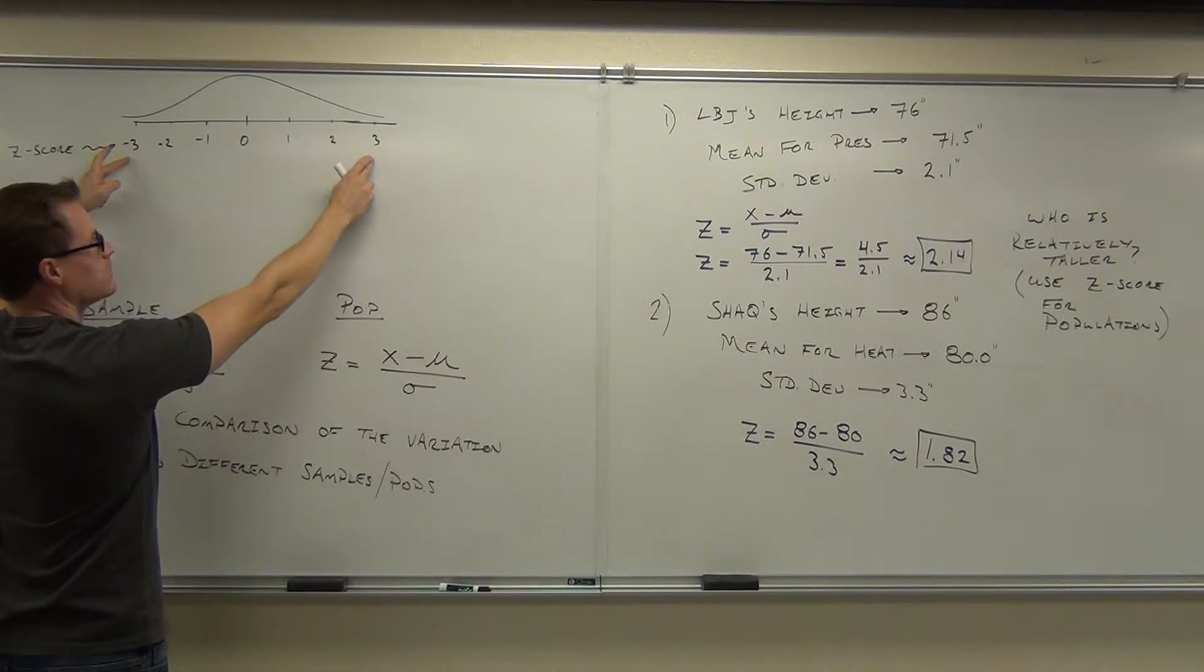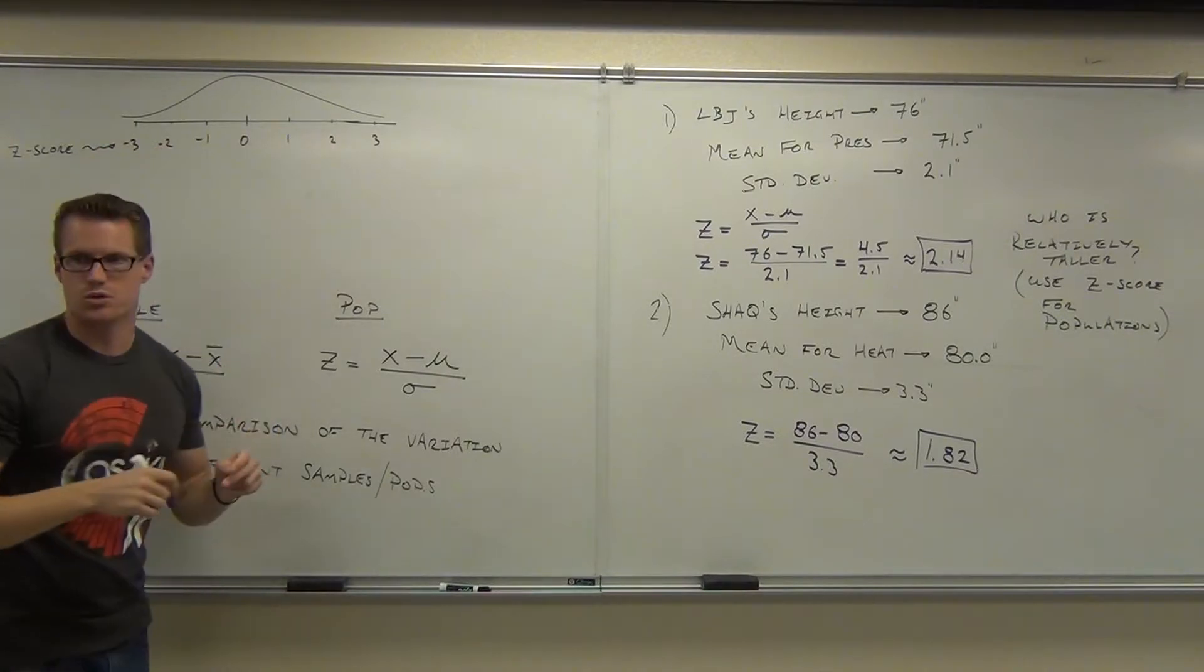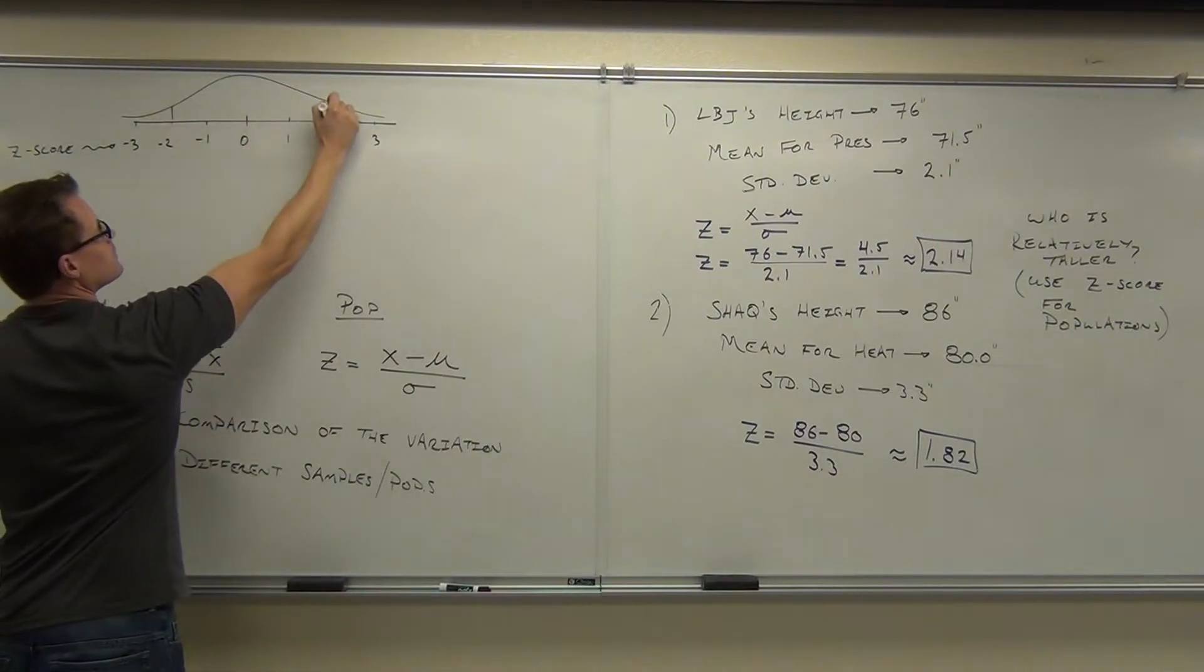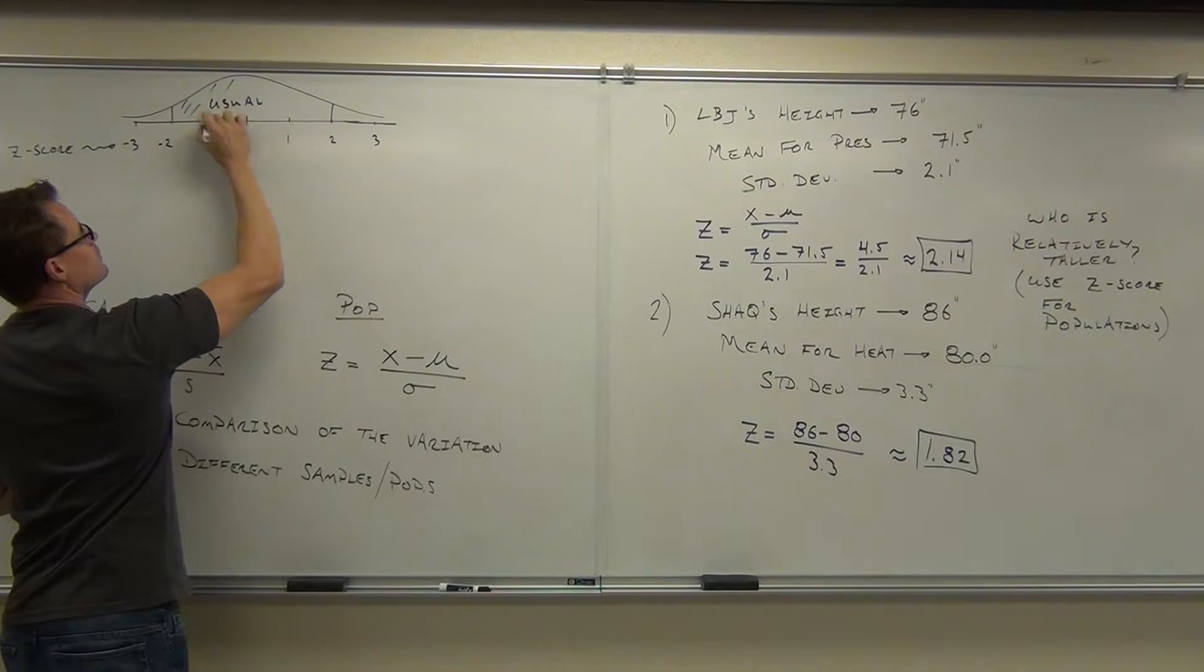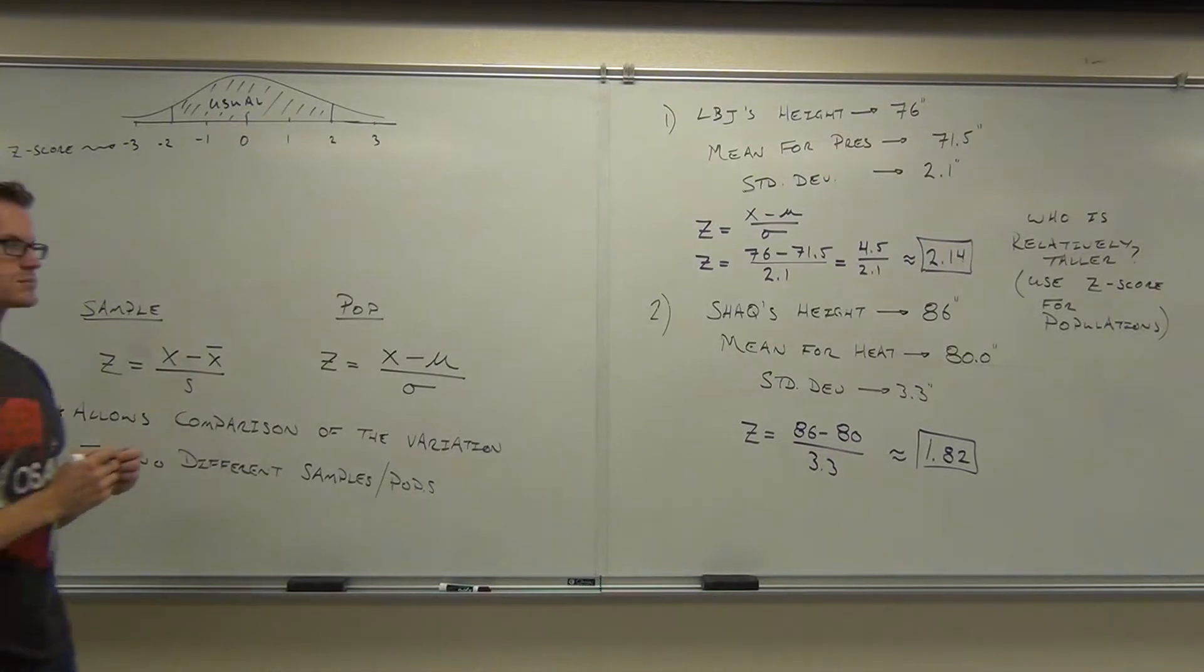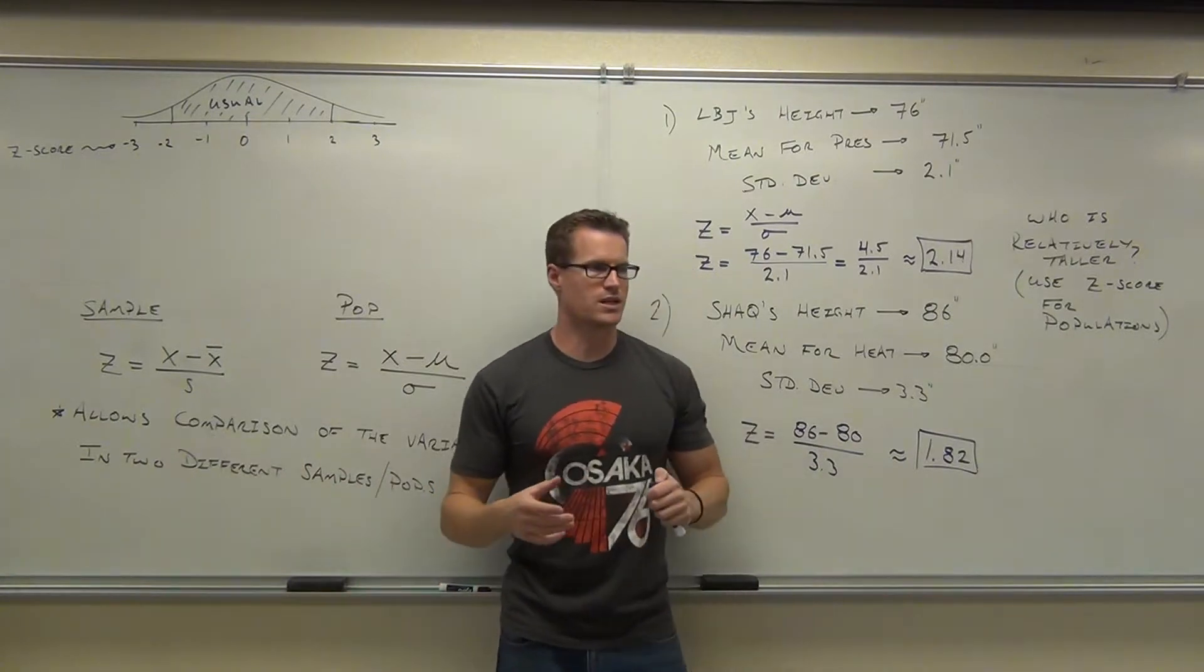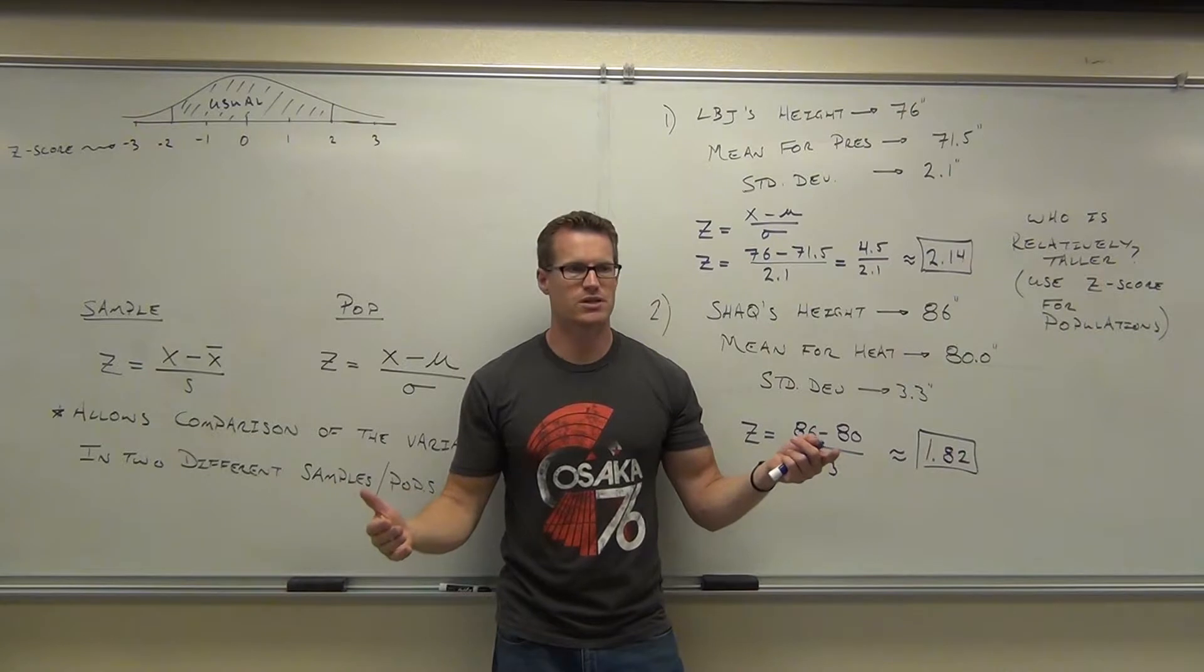So 68% is going to be between negative one and one for your Z score. 95% is going to be between negative two and two for your Z score. 99.7 between negative three and three. What was considered usual? The 95% range was considered your usual. Are you with me on that? What that implies for us, so draw your lines like this. Put this range in here is usual.